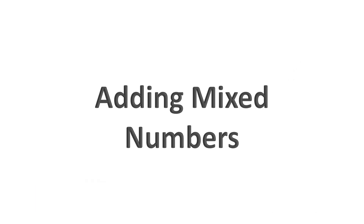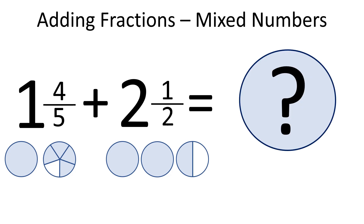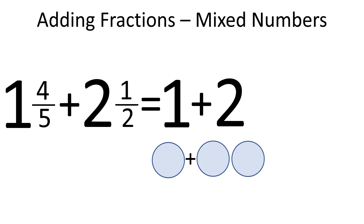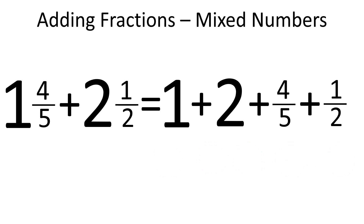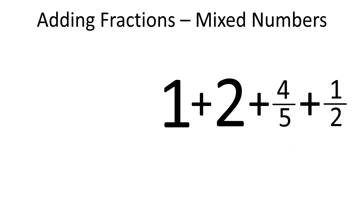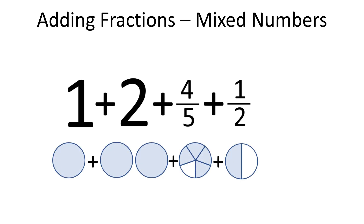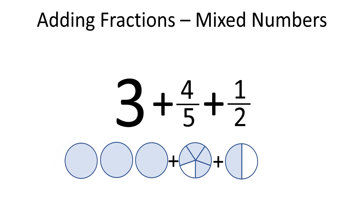Let's talk about adding mixed numbers. To add mixed numbers, we can first add the whole numbers and then add the fractions. In our example, we would add 1 and 2 together first, and then 4 fifths and 1 second. So 1 plus 2 is 3. This way, we have 3 plus 4 fifths plus 1 second.